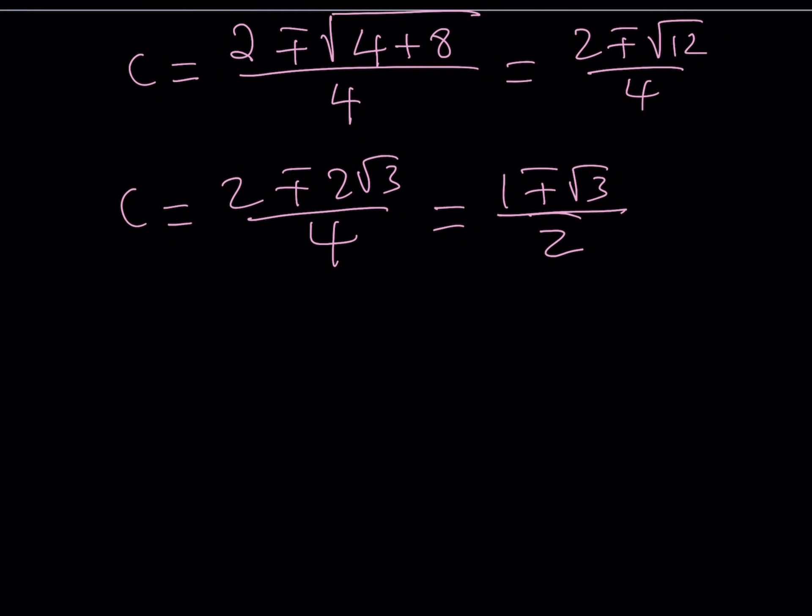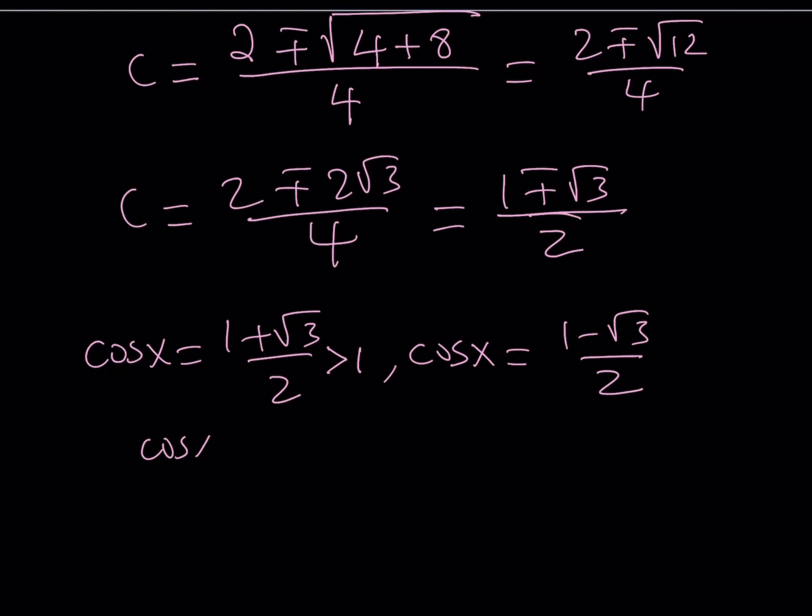Because cosine of x, if cosine of x is equal to 1 plus root 3 over 2, or if cosine x is equal to 1 minus root 3 over 2, what happens? Now, notice that root 3 is greater than 1. When you add it to 1, you get a sum that is greater than 2. When you divide it by 2, you get a quotient that is greater than 1. And this is not acceptable because cosine x, as you know, must be between negative 1 and 1 inclusive. So, cosine of any angle in the real world cannot be greater than 1. So, this is not acceptable. So, we are left with only one value for cosine of x. And that is going to be 1 minus root 3 over 2.